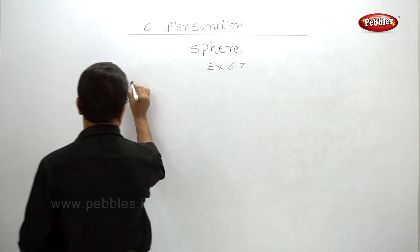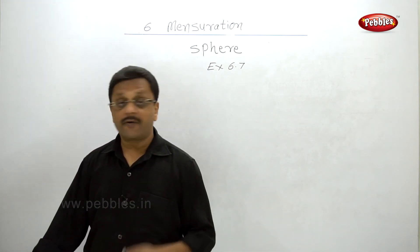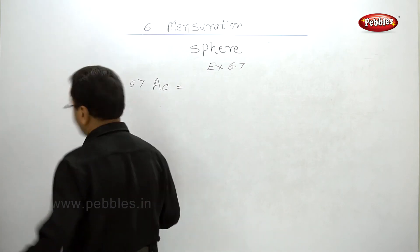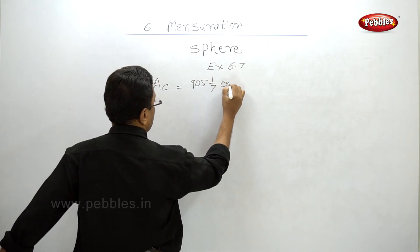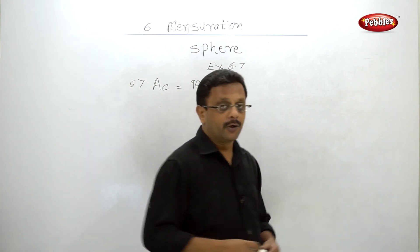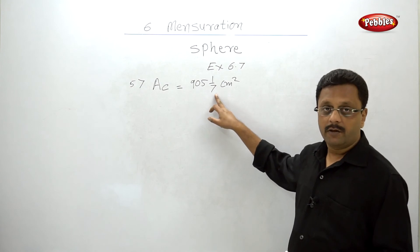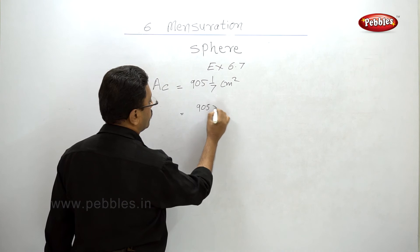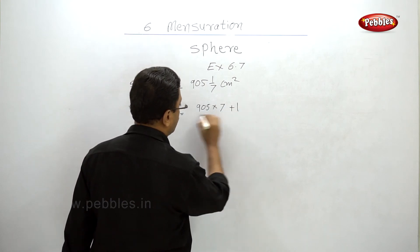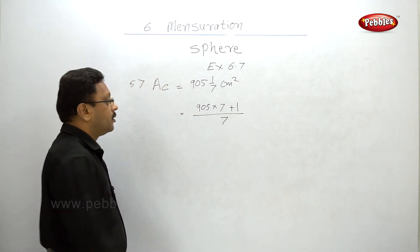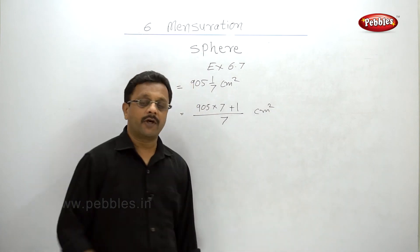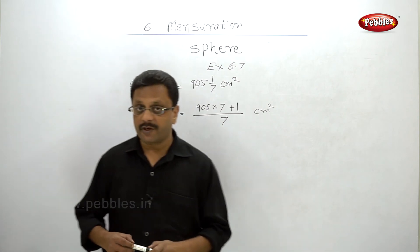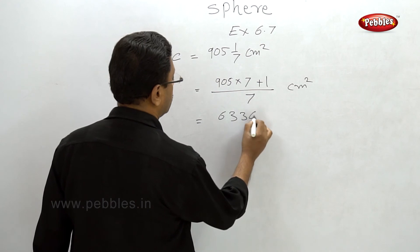Fifth problem: the curved surface area of a hemisphere is 905 1/7 cm² (which is 6336/7 cm²). What is its volume? Don't be afraid — you know how to solve this. From the curved surface area you can find the radius, and from the radius calculate the volume of the hemisphere.